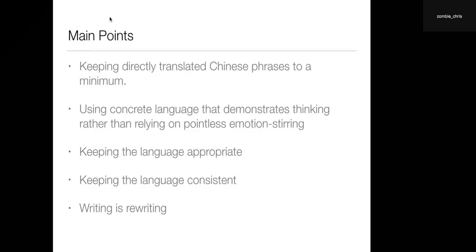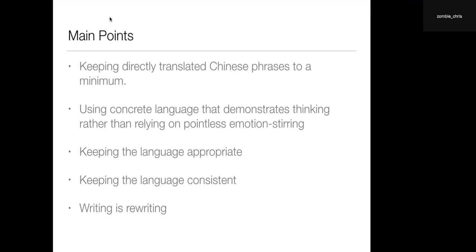Some of the key things that we have to think about when we're communicating: we need to keep directly translated Chinese phrases to an absolute minimum. We need to use concrete language that demonstrates thinking, rather than relying on stirring people's emotions or persuading them. We don't need to do that in our introductory speech — all we need to do is feel that we've thought about something and we're keeping the audience in mind. We always need to use concrete language and talk about things that really exist.